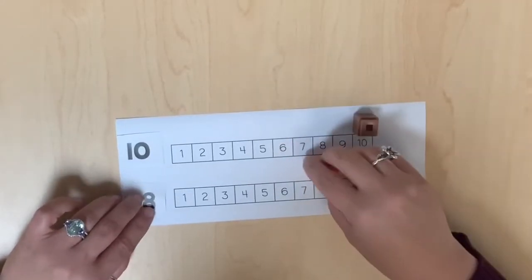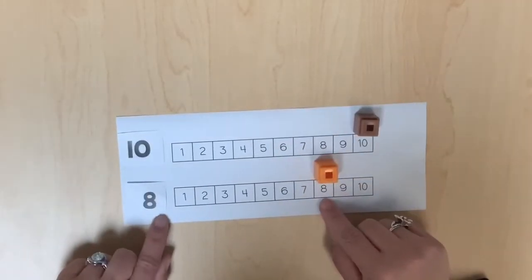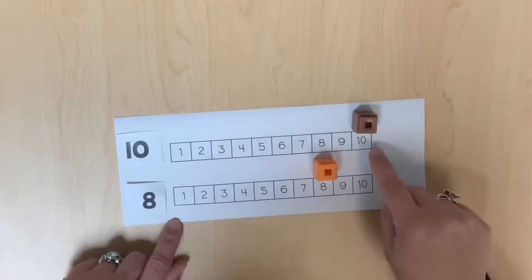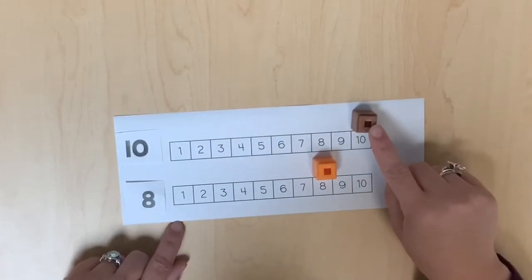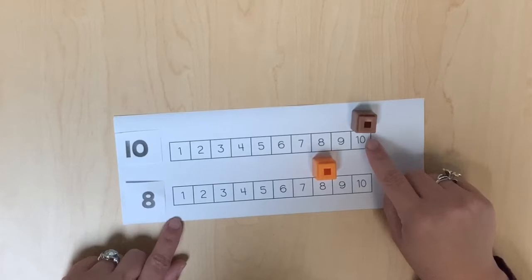Eight is less than ten because fewer spaces were counted. Ten is greater than eight because more spaces were counted.